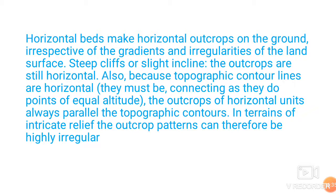Outcrops may be of different size and shape. They may be horizontal or inclined. Generally, horizontal beds make horizontal outcrops on the ground, irrespective of the gradient and irregularities of the land surface — even if the land surface is uneven or has a slope, if the rock beds are horizontal, the outcrop will be horizontal. Because topographic contour lines are horizontal, the outcrops of horizontal units always run parallel to the topographic contours.